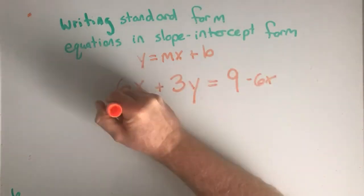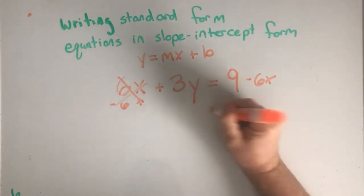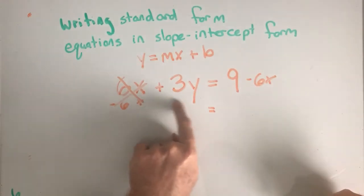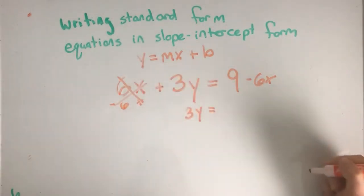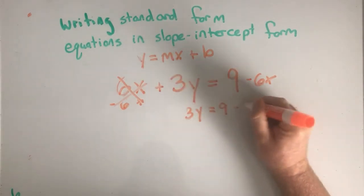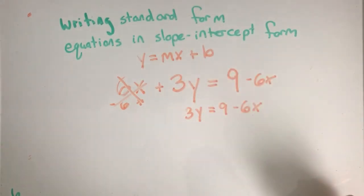It cancels the 6x over here, and now I'm left with positive 3y over here. So I'm going to write 3y equals 9 minus 6x.